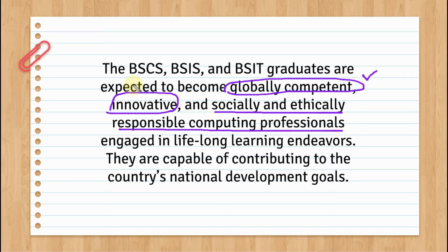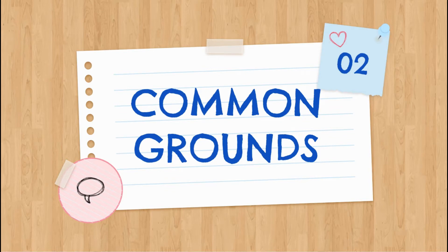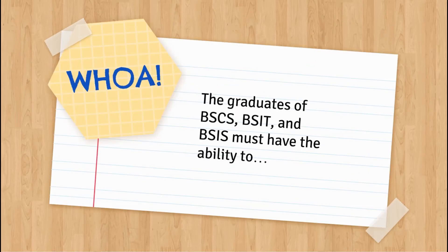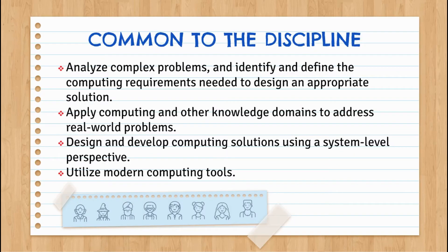Graduates must also communicate with stakeholders and clients on how technology can aid problems in their organizations. Socially and ethically responsible computing professionals means their work does not cause harm or breach the privacy of individuals. The common grounds of these programs state that graduates must be able to analyze complex problems and identify computing requirements — hardware and software — to design appropriate solutions, apply computing knowledge to address real-world problems, and design computing solutions using a system-level perspective.